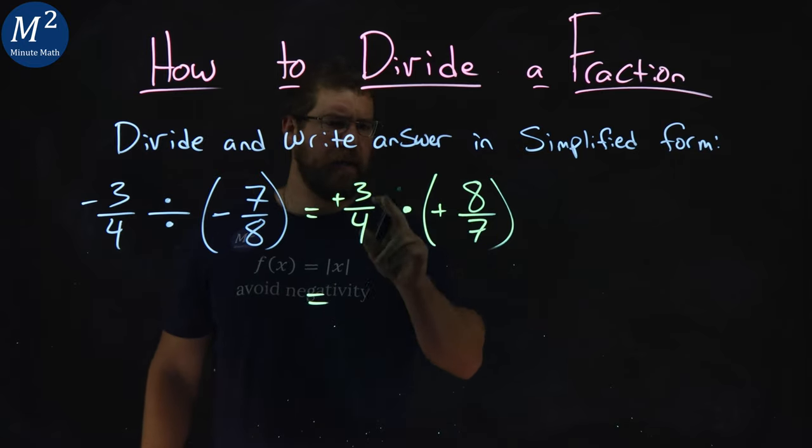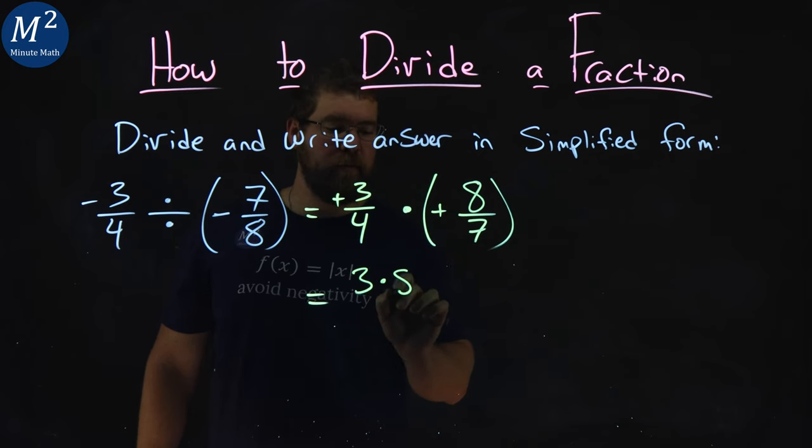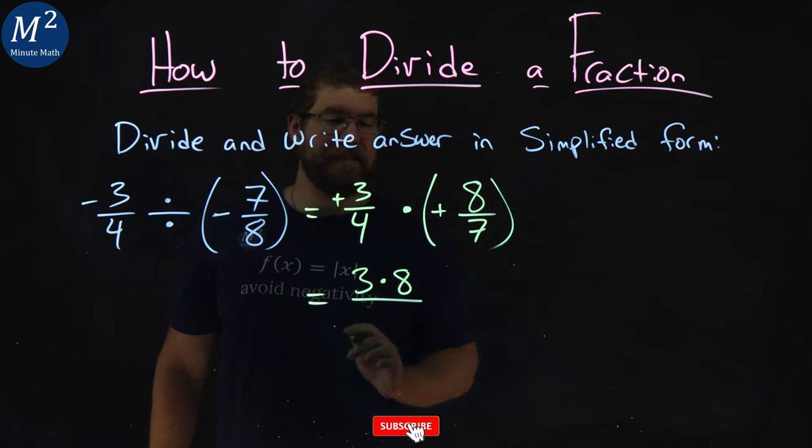Don't worry about it now. Three times eight, write that out: three times eight over four times seven.